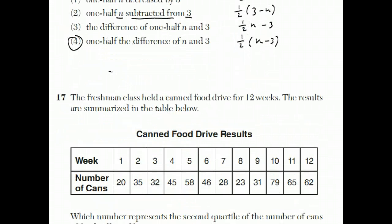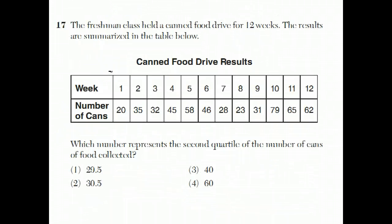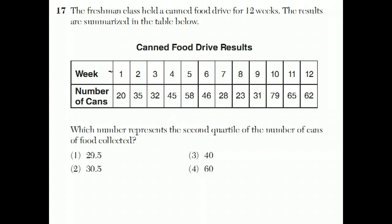Moving on to number 17. Freshman class held a canned food drive for 12 weeks. The results are summarized in this table below. Which number represents the second quartile of the number of cans of food collected? You can take a minute, push pause, or click on the screen.